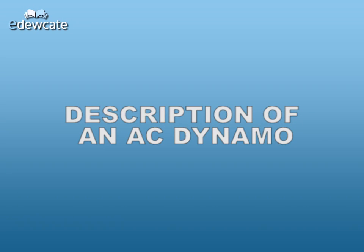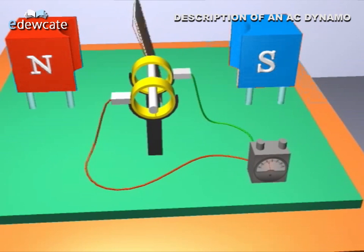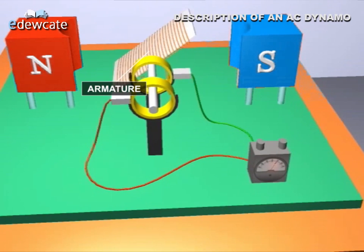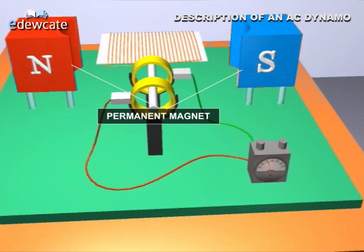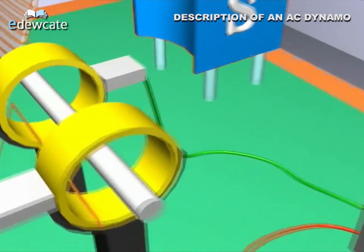Description of an AC Dynamo. An AC Dynamo consists of mainly four parts: an armature, a permanent magnet, two slip rings, and two carbon brushes.